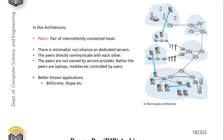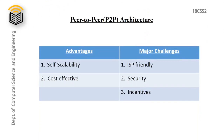P2P architecture has some advantages. One is self-scalability — a peer can add workload to the system as well as serve services to other peers. Second is cost-effectiveness: since there is no requirement for a dedicated server, it is cost-effective.